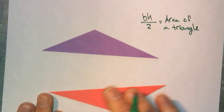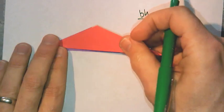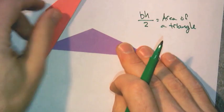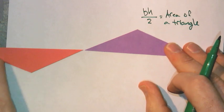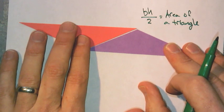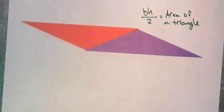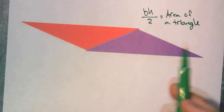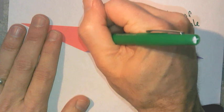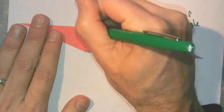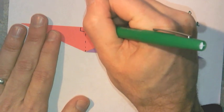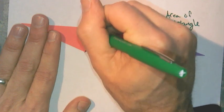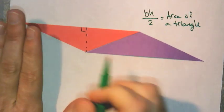Just to review: rotate the triangle 180 degrees, translate it, and you get a parallelogram — base times height. The height is defined as the perpendicular distance from a vertex to the opposite side. Divide by two and you have the area of a triangle.